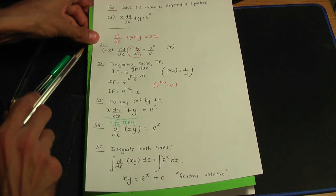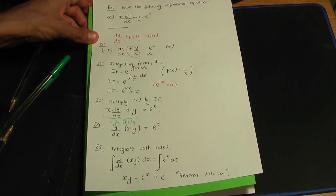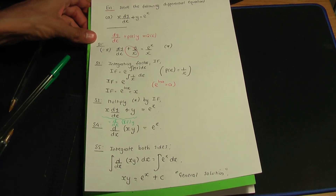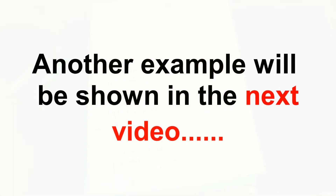These five steps give the general solution to a first order linear differential equation. If values for x and y are provided, we can find a particular solution — that will be covered in a future example.